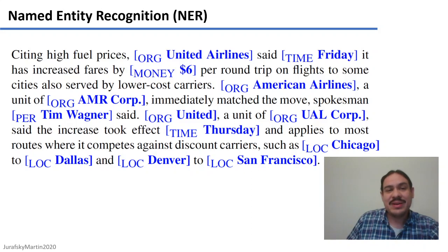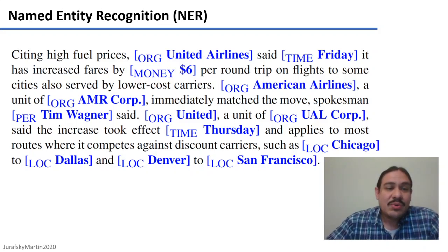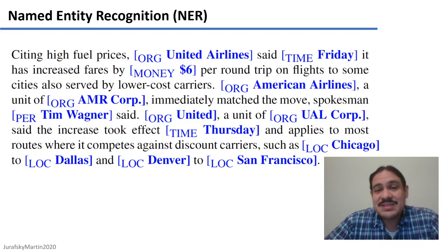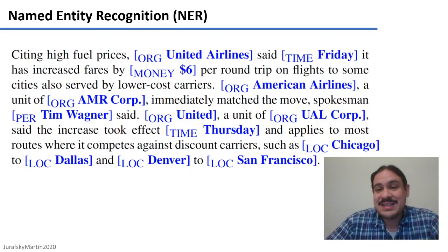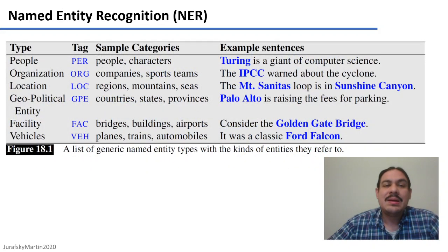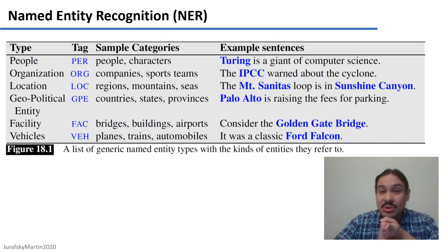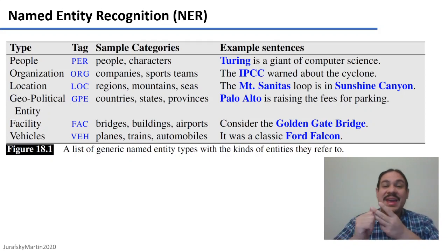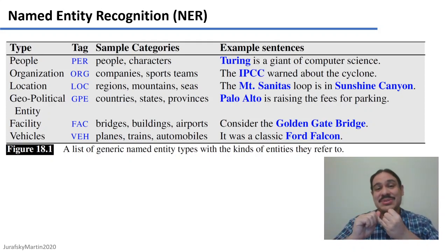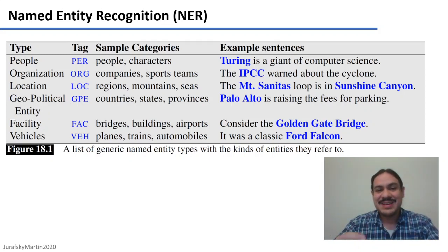Let's focus here on named entity recognition. This is an example from the book where you can see the different entities in a paragraph — for example, an organization like United Airlines, a time like Friday, and locations like Dallas, Denver, and San Francisco. There are several types of entities recognized by most systems: people (which can be real people like Turing, or characters), organizations, locations such as Sunshine Canyon or Denver, geopolitical entities like Hanover, New Hampshire, or Palo Alto, facilities, vehicles, and so forth.